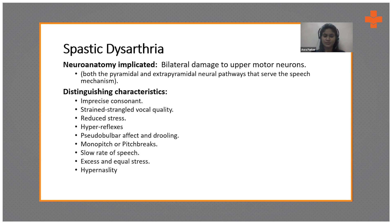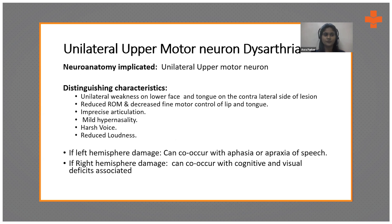Unilateral upper motor neuron dysarthria is caused by unilateral upper motor neuron damage. It is usually found with Broca's aphasia — if you have left motor cortex infarct, you will usually see unilateral upper motor neuron dysarthria. The distinguishing characteristics are unilateral weakness of the lower face and tongue on the contralateral side, reduced range of motion, imprecise articulations, mild hypernasality, harsh voice, and reduced loudness. If the left hemisphere is damaged, it can co-occur with aphasia or apraxia of speech; if the right hemisphere is damaged, it can co-occur with cognitive and visual deficits.